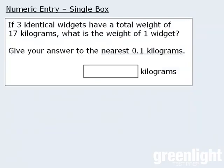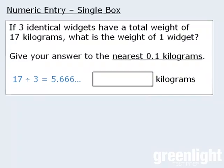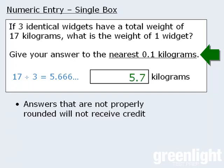Let's take a look at a numeric entry question where we're told to round our answer. If three widgets weigh 17 kilograms then we can find the weight of one widget by dividing 17 by 3 to get 5.66 repeating. Since we're told to round our answer to the nearest tenth we must round our answer to 5.7. If we fail to round our answer to the nearest tenth as directed we will not receive credit for our response.